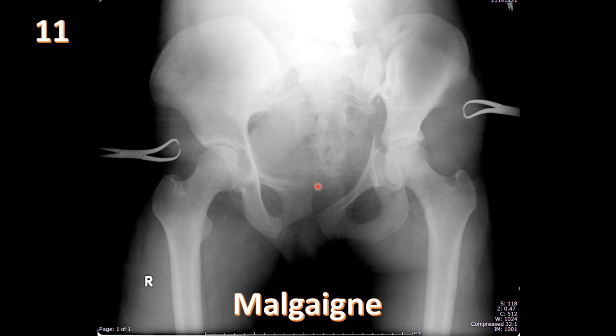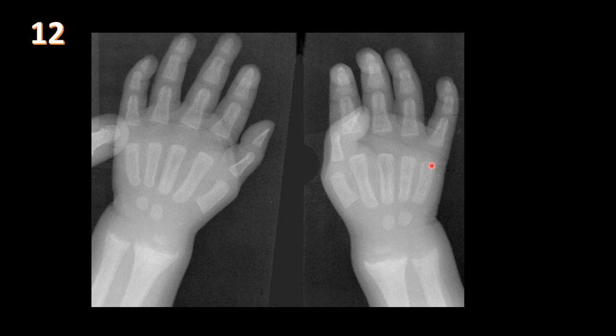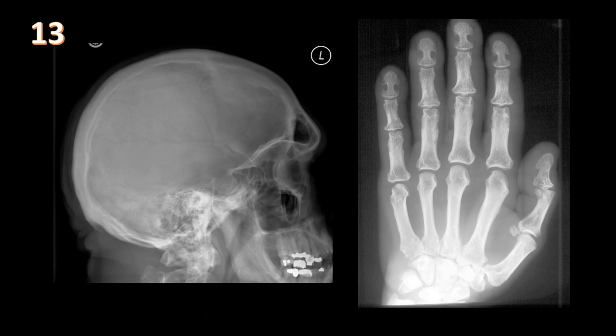Two views of the hand in a pediatric patient show mild osteopenia with cupping and irregularity of the distal metaphyses of the radius and ulna — very characteristic of rickets, related to vitamin D deficiency. In children, it affects the growth plate and metaphysis. In adults it is called osteomalacia, related to abnormal bone mineralization. Whenever you see fraying, cupping, and irregularity of the metaphyses in long bones, think rickets.